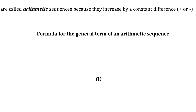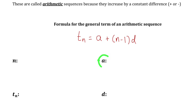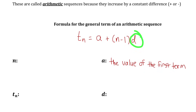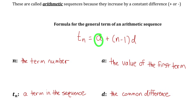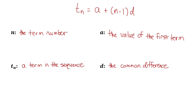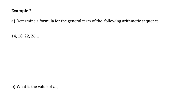Now let's generalize this formula for any arithmetic sequence. The formula for the general term is: Tn equals a plus (n minus 1) times d. Where a is the first term of the sequence, d is the constant common difference, n is the term number, and Tn is the actual value of the term. To find the value of any term, you take your first term and add the common difference n minus one times.